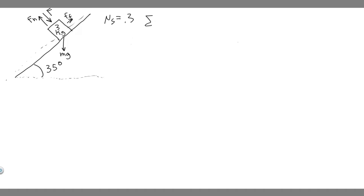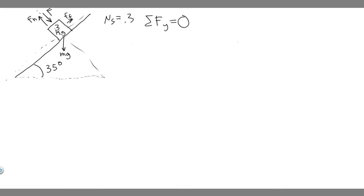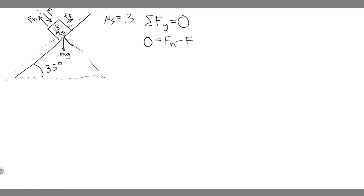We're going to start by taking the forces in the y-direction. The sum of the forces in y equals ma, but the box is not moving at all in the y-direction, so it equals zero. So: zero equals the sum of the forces along that line. The forces acting in the y are F sub N (positive, going up), minus F (going downward), and then there's a component of the gravity force — we need the y-component of mg since it acts along this line.